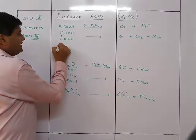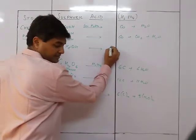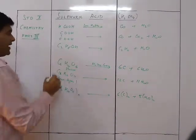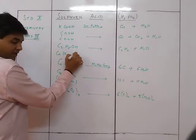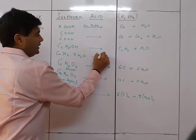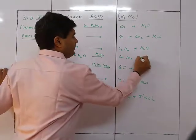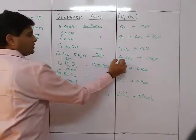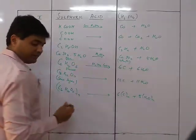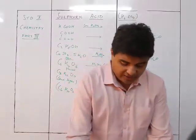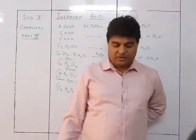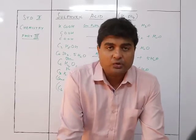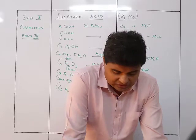Ethanol (C₂H₅OH) reacted with concentrated H₂SO₄ gives C₂H₄ + H₂O. CuSO₄·5H₂O in the presence of concentrated H₂SO₄ gives CuSO₄ + 5H₂O — water of crystallization is lost. Observation: blue crystals of copper sulfate turn into white amorphous powder.